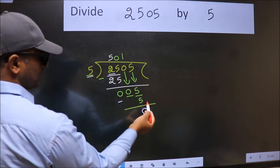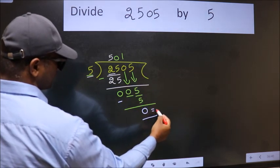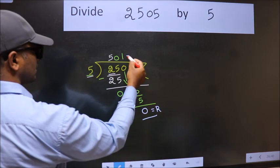No more numbers to bring it down. So we stop here. This is our remainder. This is our quotient.